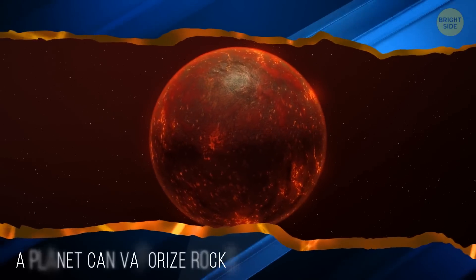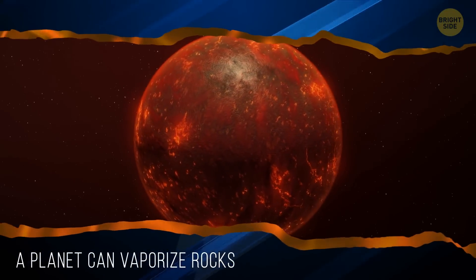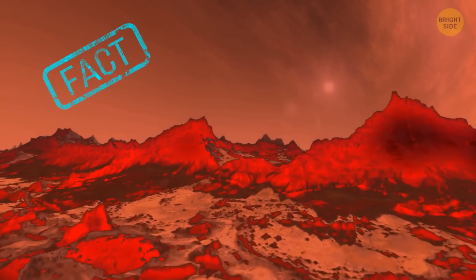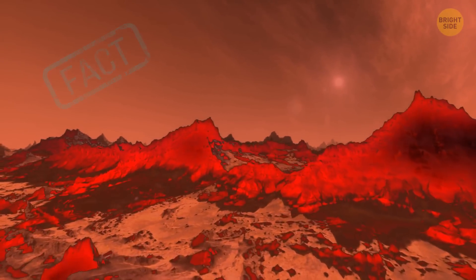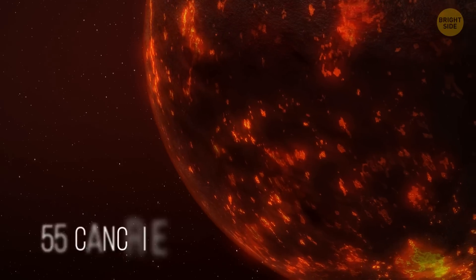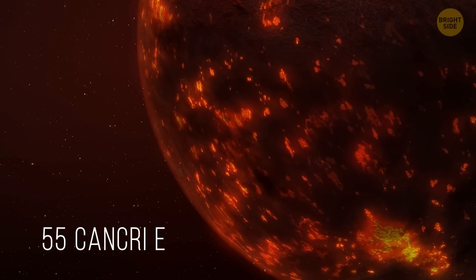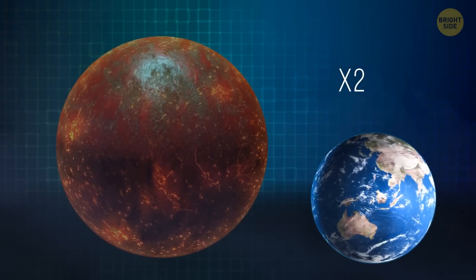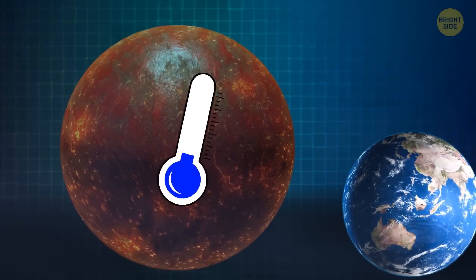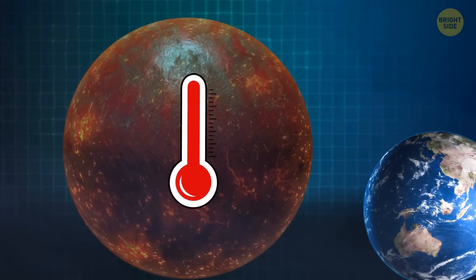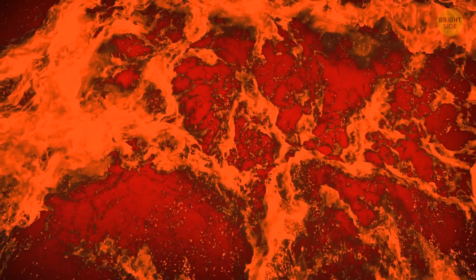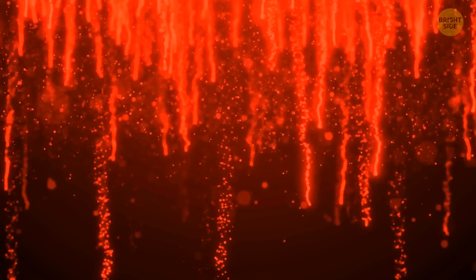A planet can be hot enough to vaporize rocks. Any guesses? Is this a myth or a fact? This is a fact. The temperature in this universe is indeed very hot. There's a planet, the temperature of which is enough to melt and even vaporize rocks. It's two times bigger than the Earth. This super-Earth is similar to our planet, but it is way too hot. Experts believe that it possibly has oceans of lava and clouds that rain molten rock.